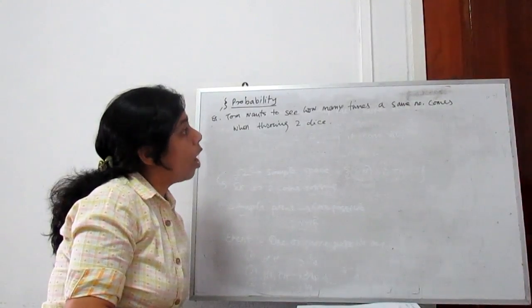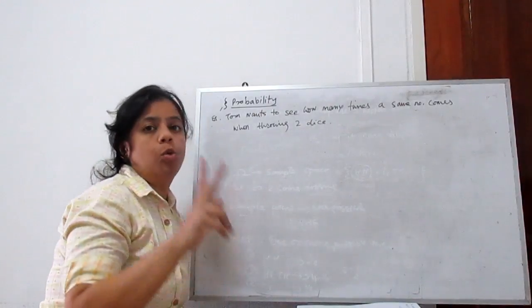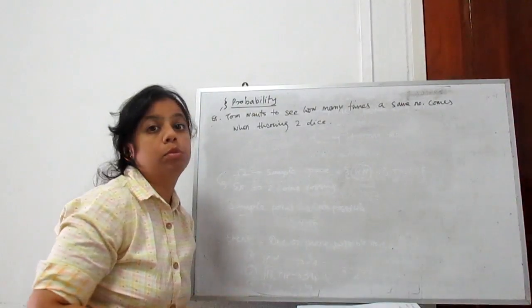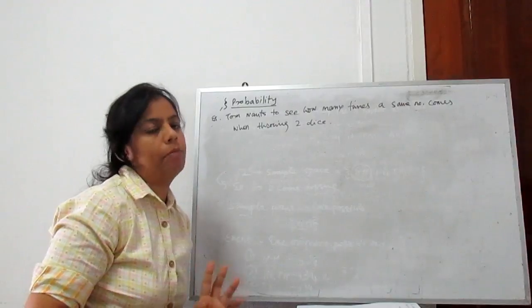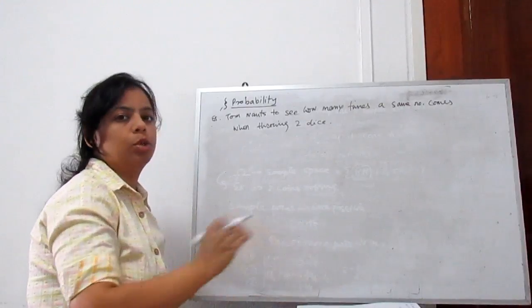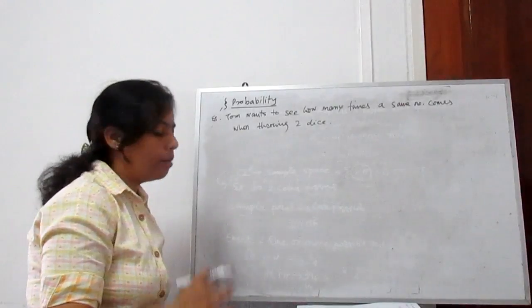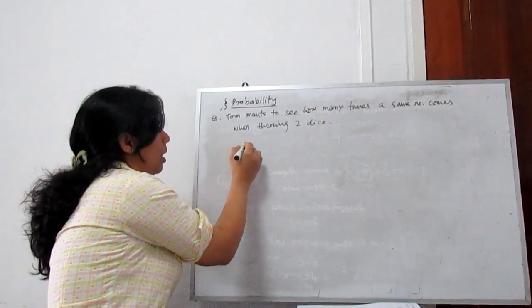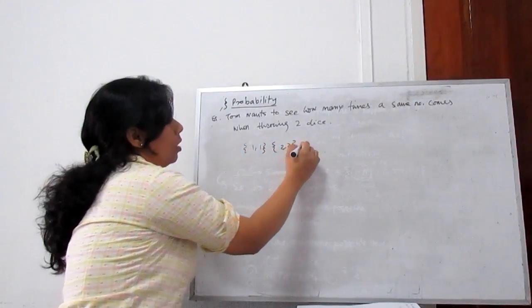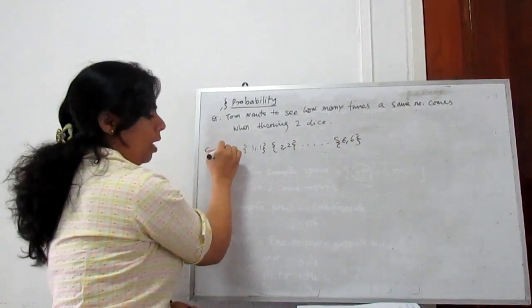Problem: Tom wants to see how many times the same number comes when throwing 2 dice. Tom has 2 dice and he has to throw. What is the possible outcome to get 2 same numbers? The event Tom is looking for is same number: 1-1, 2-2, 3-3, 4-4, 5-5, up to 6-6. So this is our event space.